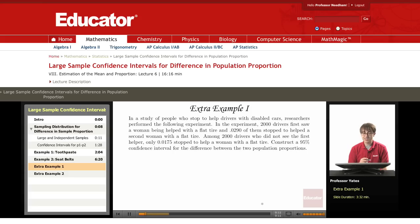So our first example, in a study of people who stopped to help drivers with disabled cars, researchers performed the following experiment. In the experiment, 2,000 drivers first saw a woman being helped with a flat tire and 0.0290 of them stopped to help a second woman with a flat tire.